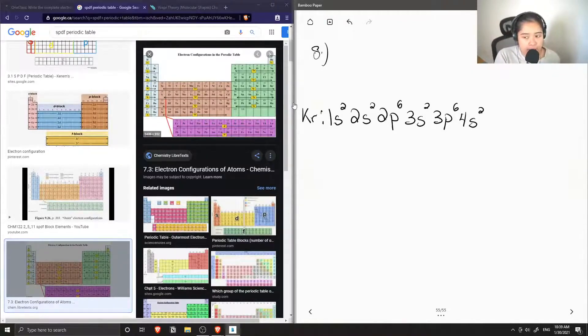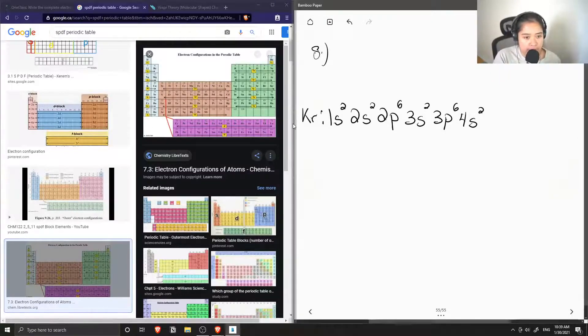you'll notice that the row number is minus one, so instead of row 4, we write row 3d, and the d block is able to hold a maximum of 10 electrons. So we write 3d10,